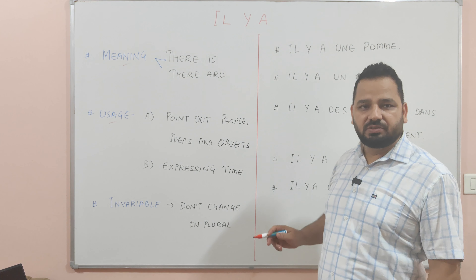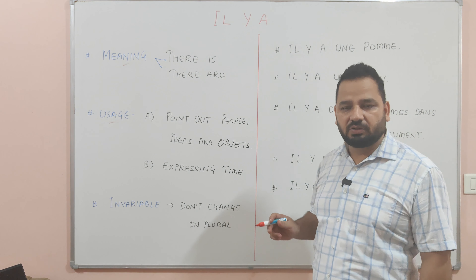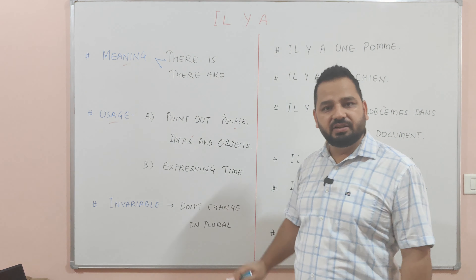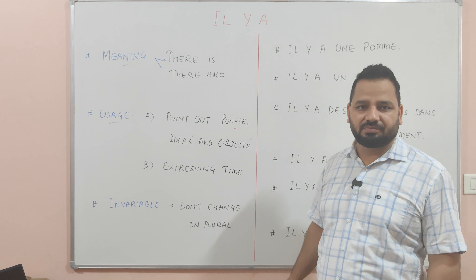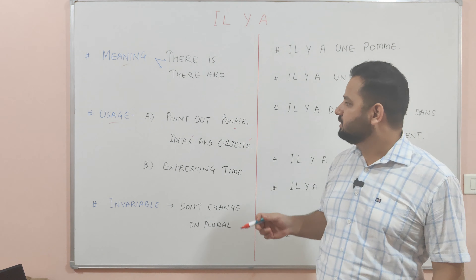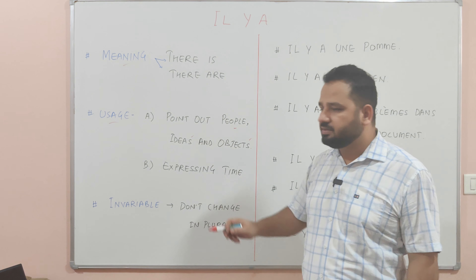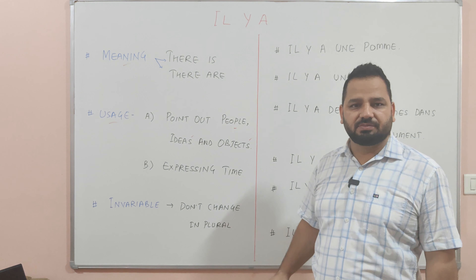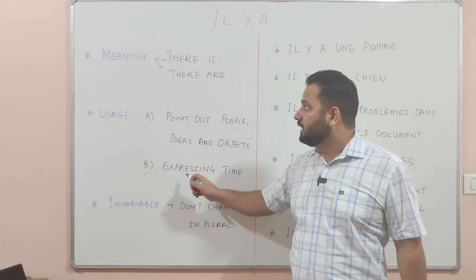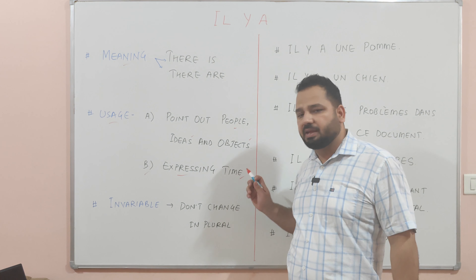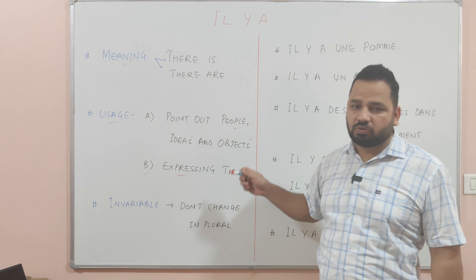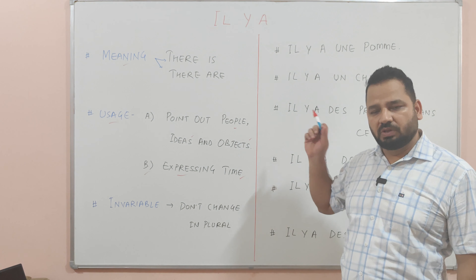There are two usages. We are using 'il y a' to point out people, ideas, and objects. Also, there is one more usage of 'il y a' — we are using 'il y a' to express time. Both of these conditions we will discuss through examples.